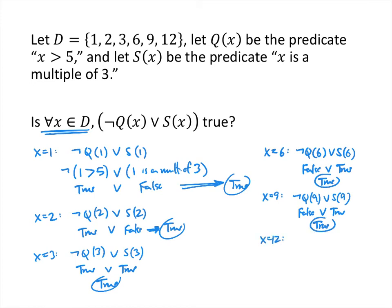Now we're at the last element, x equals 12. Not Q of 12: '12 is greater than 5' is true, so the negation gives false. S of 12: '12 is a multiple of 3' is true. False or true is true. So every element of our set made this predicate true, which means the answer to our question is yes.